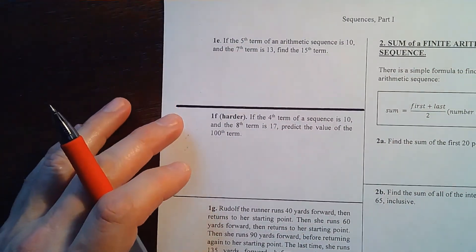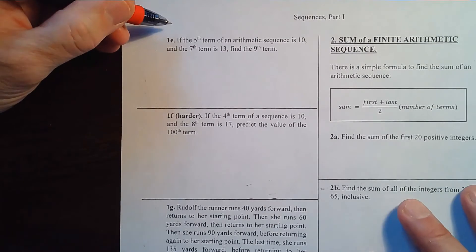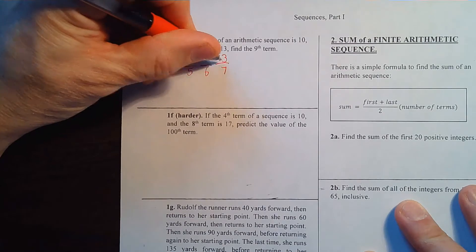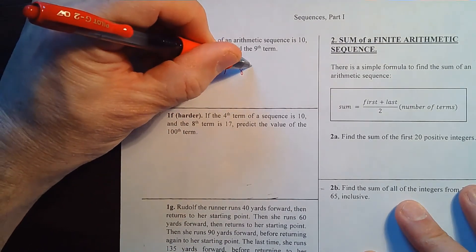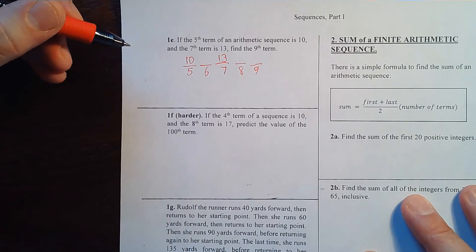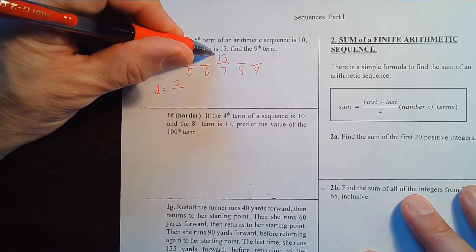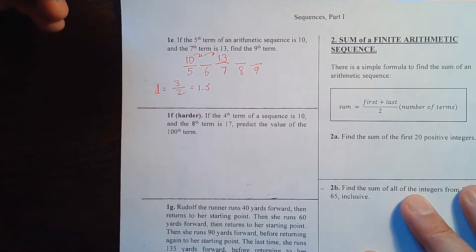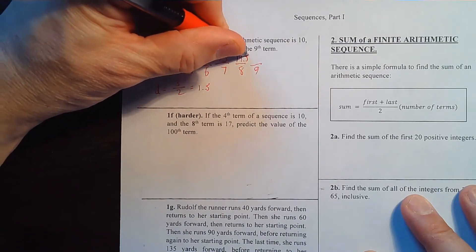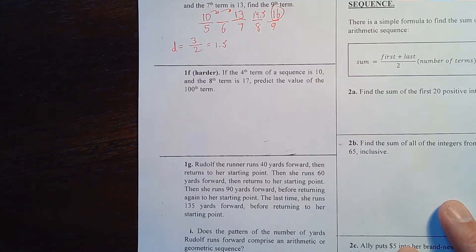Go to the next page and try 1e, 1f, and 1g. In 1e, the fifth term is 10 and the seventh term is 13. I leave a space for the sixth term. To find the ninth term I need the difference d. Using the formula: total distance from 10 to 13 is 3, over two steps, so d is 1.5. Then 13 plus 1.5 is 14.5, and adding 1.5 again gives us the ninth term.